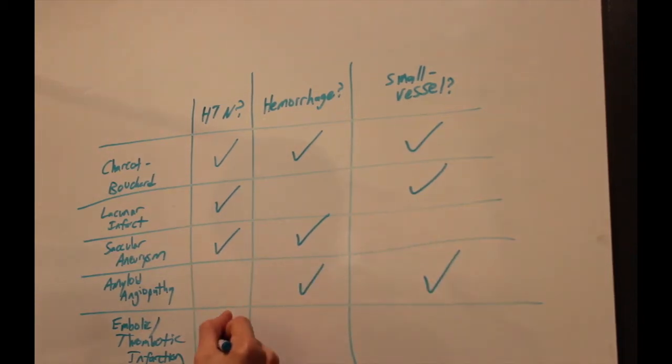Then we have amyloid angiopathy. This really has nothing to do with hypertension. It has more to do with amyloid deposition into tissues. Then we have hemorrhage with amyloid angiopathy, and it involves small vessels as well.